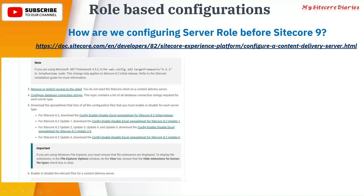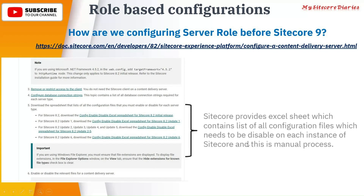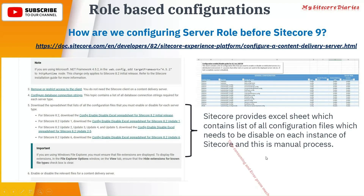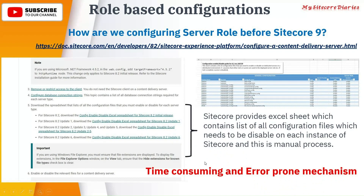To configure a content delivery server, you would go to the Sitecore documentation link where instructions are provided. There is an Excel sheet listing all the configuration files that need to be disabled on each instance. This was a manual process — you had to download that Excel file and manually disable the listed configuration files for CD or CM servers respectively. It was very time-consuming and error-prone.